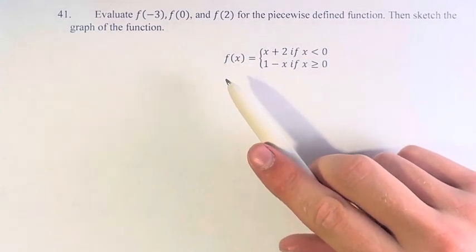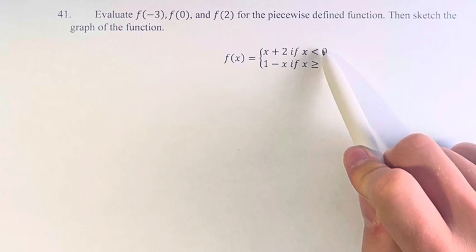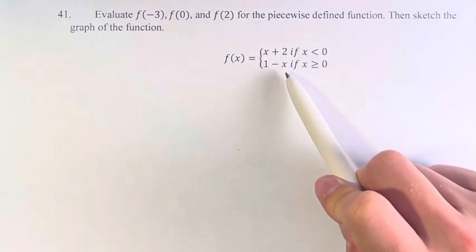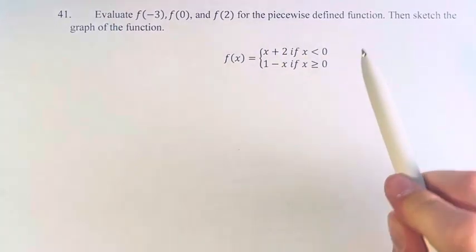So our function is f of x equals x plus 2 if x is less than 0, and 1 minus x if x is greater than or equal to 0.